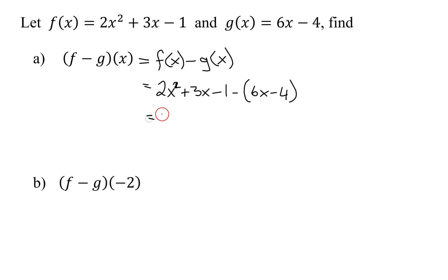So what do I have? I have 2x² + 3x - 1. Then I'm going to distribute in the negative. Negative 1 times 6x is -6x. Negative 1 times -4 is +4. So you can see that distributing a negative into this parentheses just changed both of those signs to get this expression.